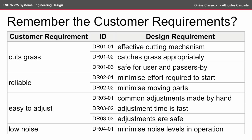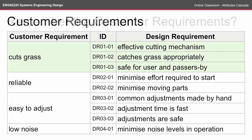So remember the customer requirements from the customer requirements online lecture. Here we developed four customer requirements — the four most important ones — and we put design requirements against each of these customer requirements. For the purposes of the attributes cascade we're just going to look at the first customer requirement, because otherwise we'll end up with quite a few pages worth of attributes.